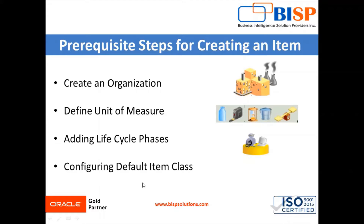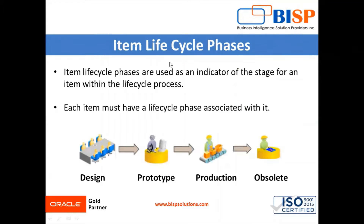In other Oracle Fusion applications you can assign items to the root item class. For item lifecycle phases, consider any manufacturing company — let's take an example item like a water bottle. For manufacturing the water bottle, first we have to define the design of our water bottle in the form of CAD. CAD is computer-aided design software for creating the design. In CAD we first define our design, which is our first item lifecycle phase in Oracle Fusion application.